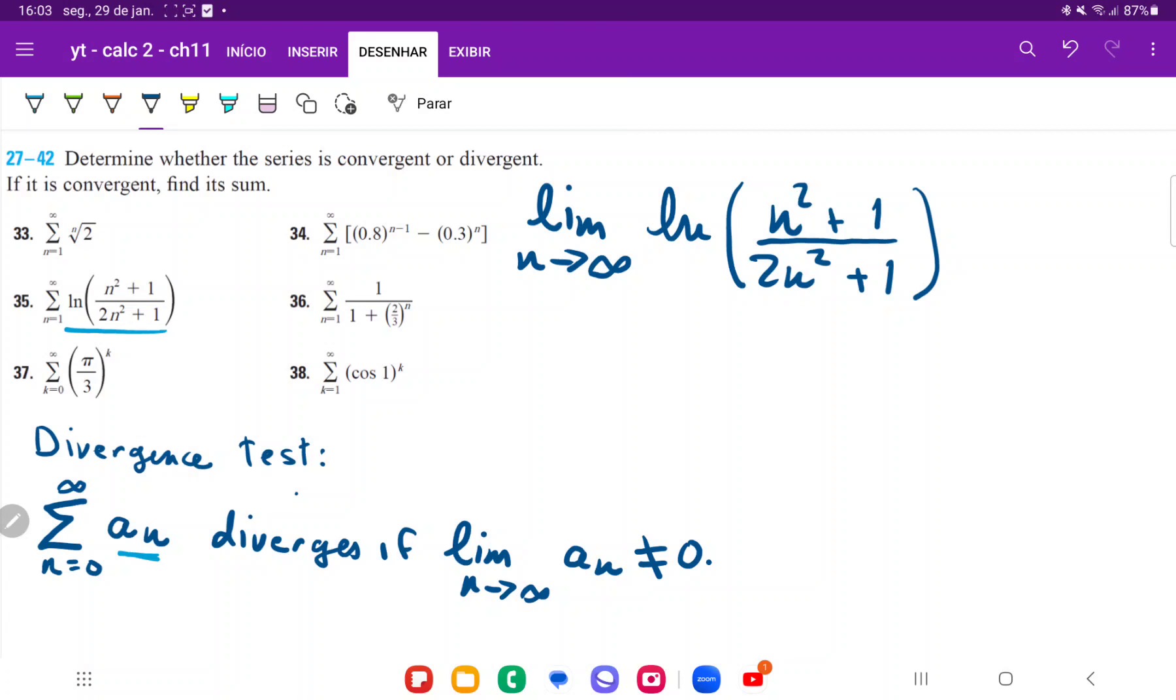The reason that we're going to divide by the highest power is if we just take this limit outright, we're going to have ln of infinity plus 1 divided by infinity plus 1. So we're going to have to divide it out so that we can get a well-defined limit.